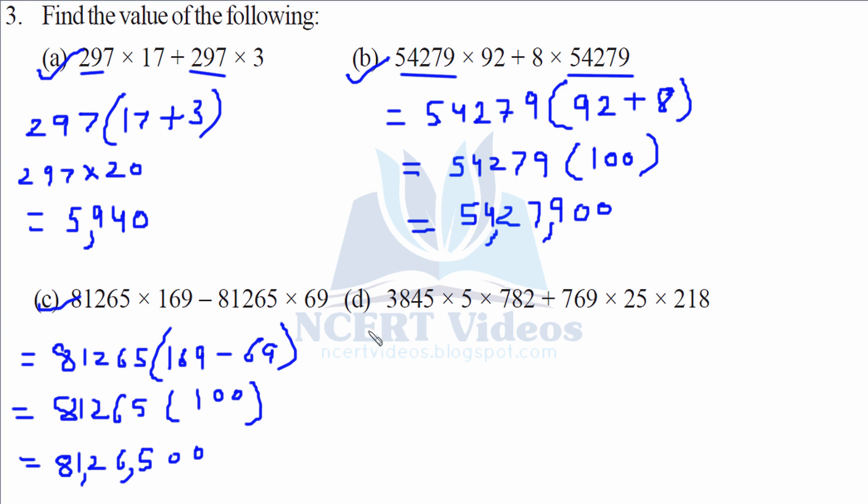Here, a little bit tricky. What we will do is first analyze the problem. So we will write 3845 into 5 into 782 as it is, plus 769. Again, now we will split 25 as 5 into 5 into 218. This will come to you by practice. So look, when we multiply it, it turns out to be 3845. The question will always be given to you in such a form that it becomes some pair. You have to just ponder over it. Again, plus 3845 when we multiply it into 5 into 218.